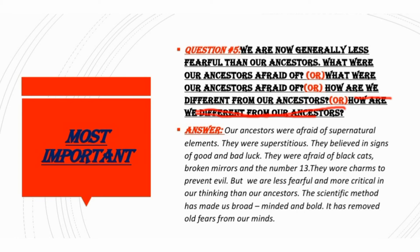The answer is: our ancestors were afraid of supernatural elements — وہ elements جن کا کوئی وجود نہیں ہے، یعنی ماورائے فطرت. Our ancestors were superstitious — توہم پرست — یعنی غلط باتوں کو ماننے والے تھے. They believed in signs of good and bad luck. They were afraid of black cats crossing their path, broken mirrors, and considered the number 13 unlucky. They wore charms — تعویز — to protect themselves from evil.